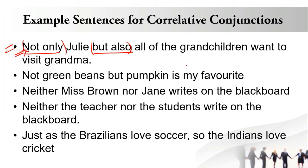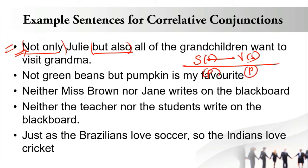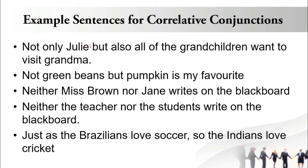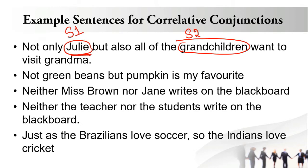So far, in every sentence we discussed, there was one subject and one verb. We found out whether it was singular or plural and tried to match them. But right now we have an entirely different scenario. We are not only talking about Julie but also talking about all the grandchildren. So let's mark Julie as subject one and grandchildren as subject two.